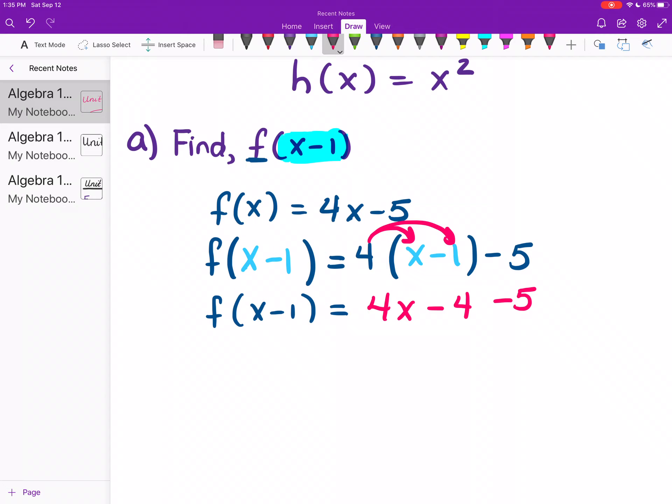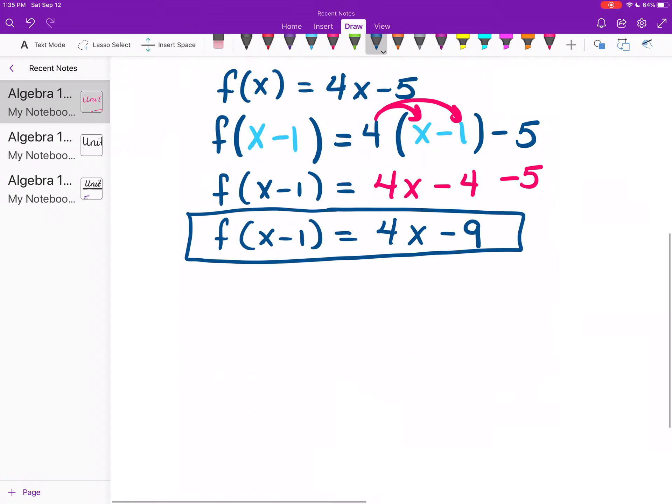I'm still not done with this problem. I need to simplify it one step further. f(x-1). Again, left-hand side being left alone. Right-hand side is going to be 4x minus 9 because negative 4 minus 5 is negative 9. And that's it. There's nothing else we can do at this point. And we're not solving. We're simplifying or evaluating if we're given a number. Okay? Let's move on to b.